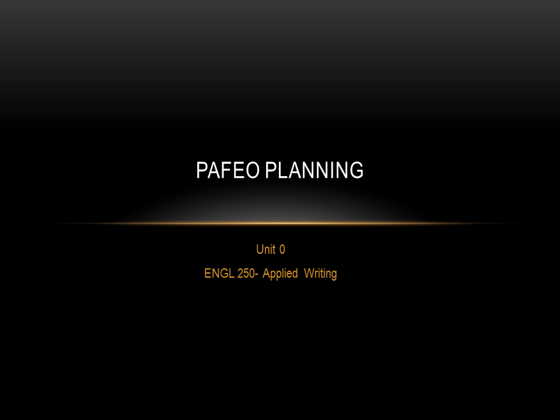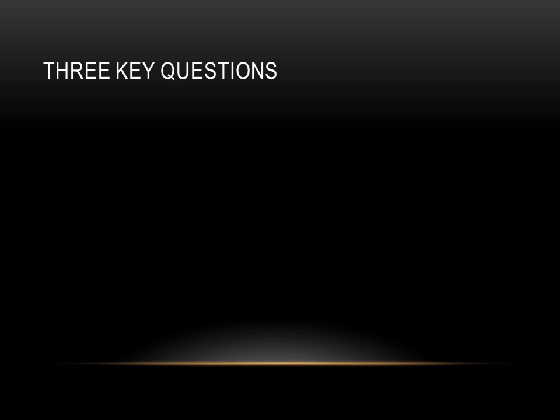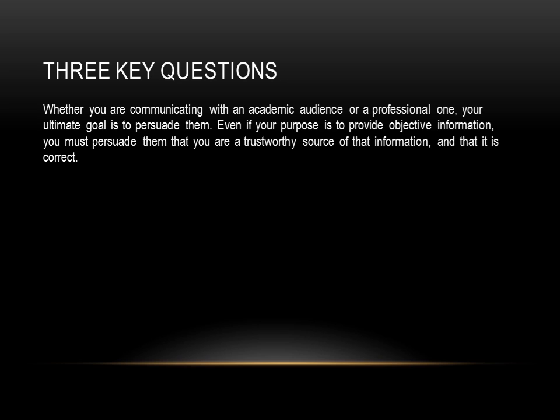You read about the rhetorical situation in chapters 1 through 5 of the Norton textbook. This presentation and corresponding reading will give you an alternative conception of the rhetorical situation. We'll begin with three key questions that are based on the assumption that, whether you're communicating to an academic or professional audience, your ultimate goal is to persuade that audience.